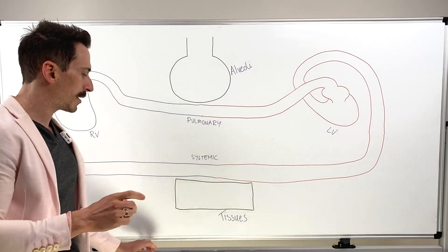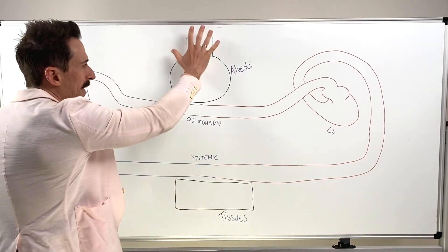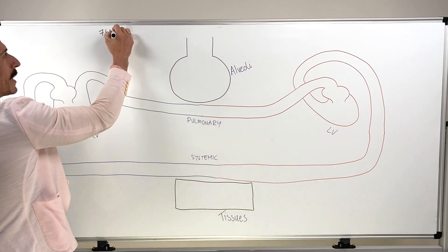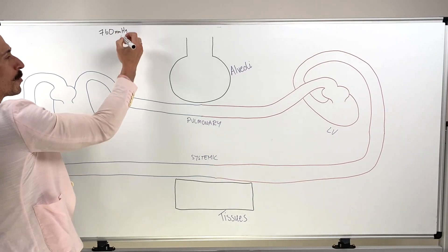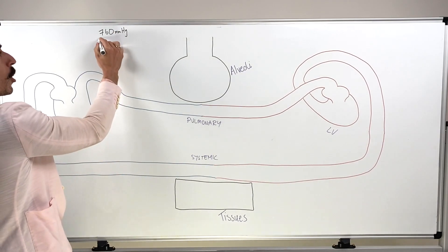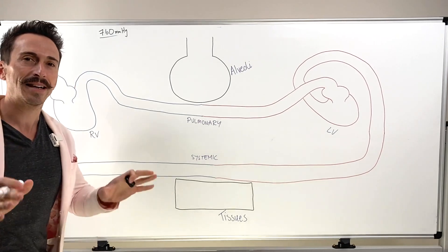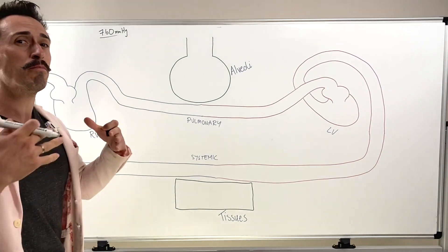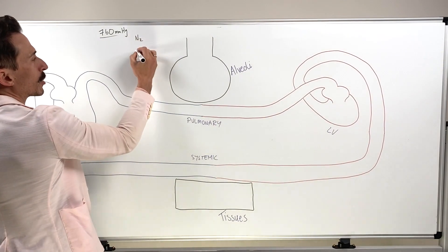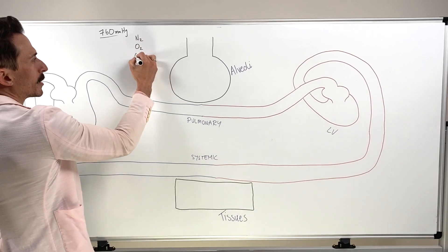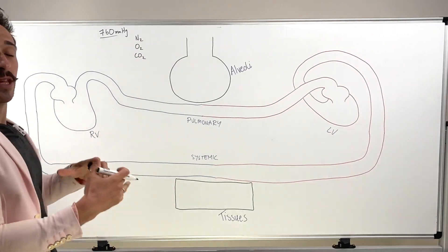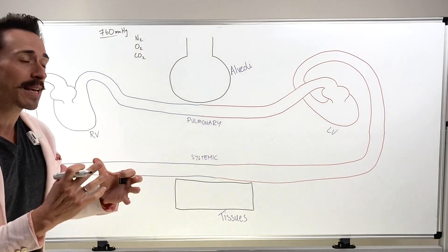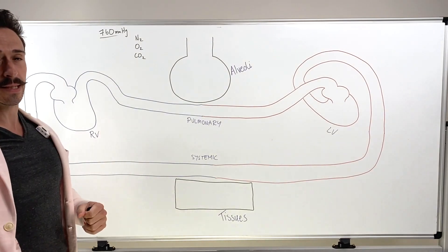We need to understand the various gases in the atmosphere and how these gases change when they get to the alveoli. The atmosphere that we breathe is made up of gases that all contribute to an overall pressure of 760 millimetres of mercury at sea level. It's made up of nitrogen, oxygen, carbon dioxide, and various other trace gases — the combination of these gases added together gives us 760 millimetres of mercury.